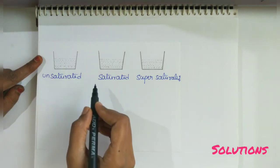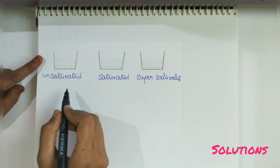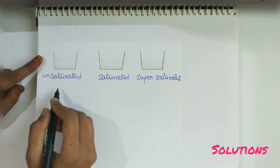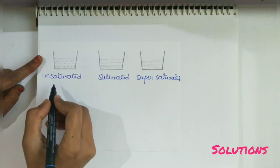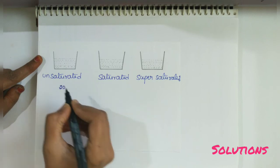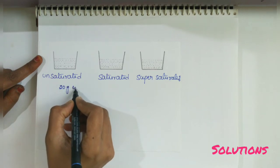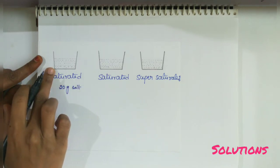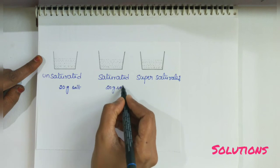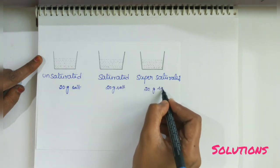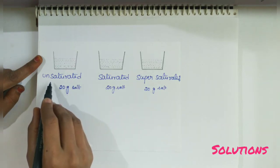Next, saturated solution, unsaturated solution, and supersaturated solution. Unsaturated solution means a solution which can dissolve some amount of solute at a given temperature. For example, if 20 grams of salt can be dissolved in a solvent, it is called an unsaturated solution — only 20 grams of salt can be dissolved.